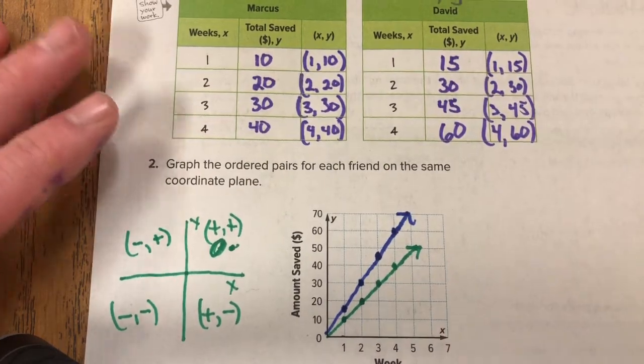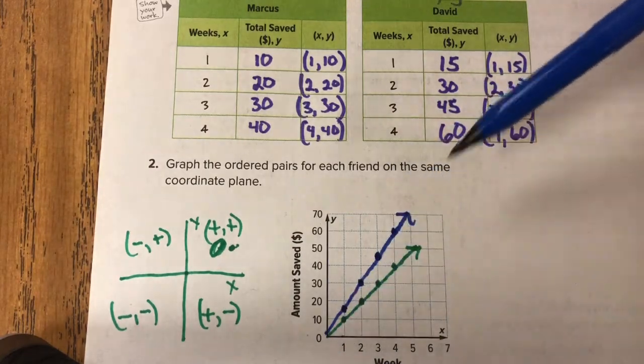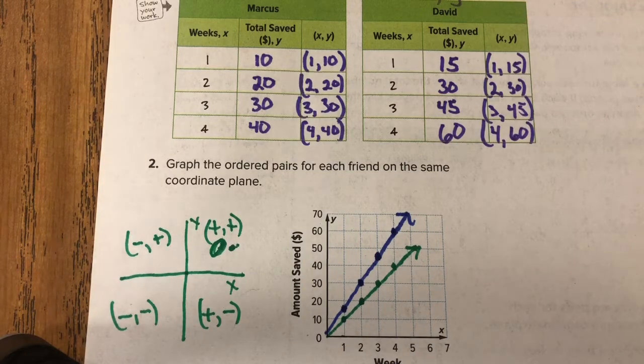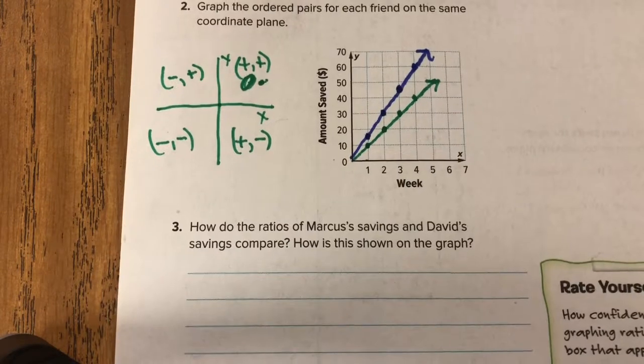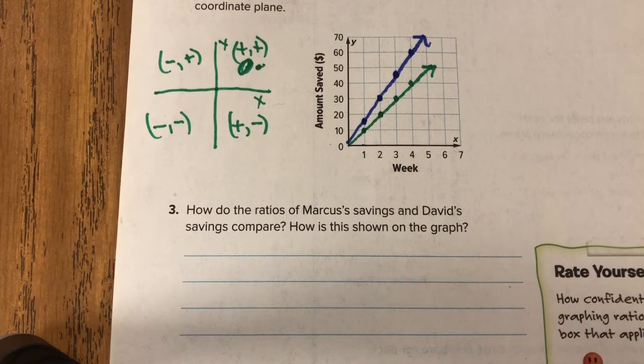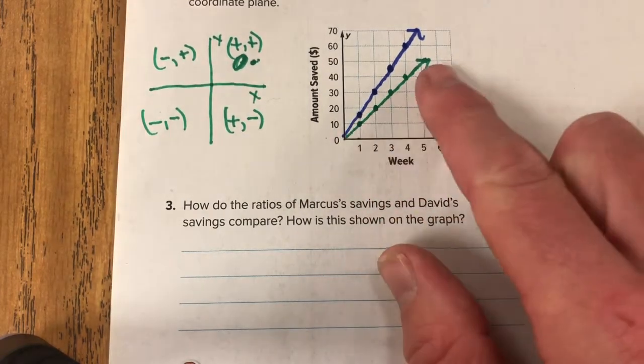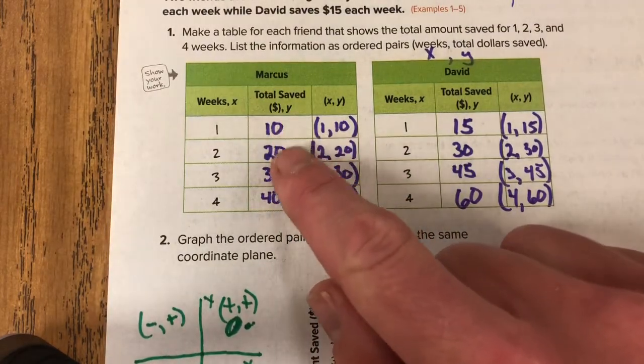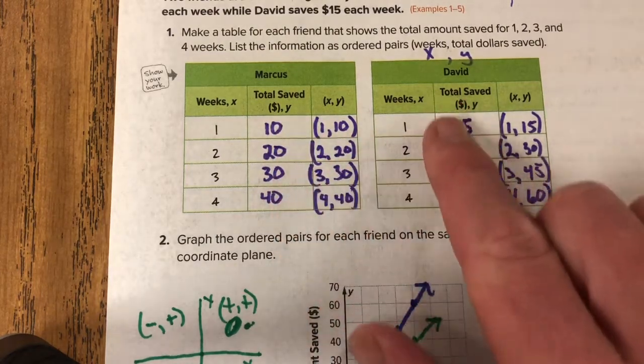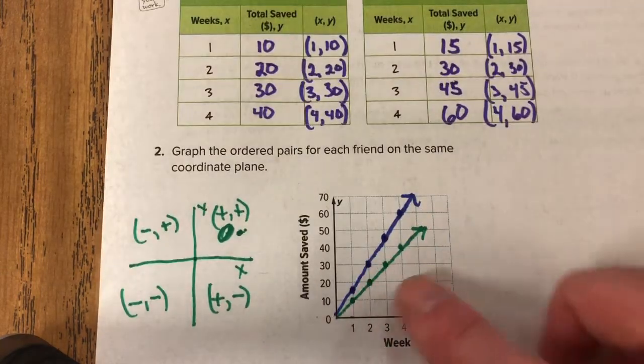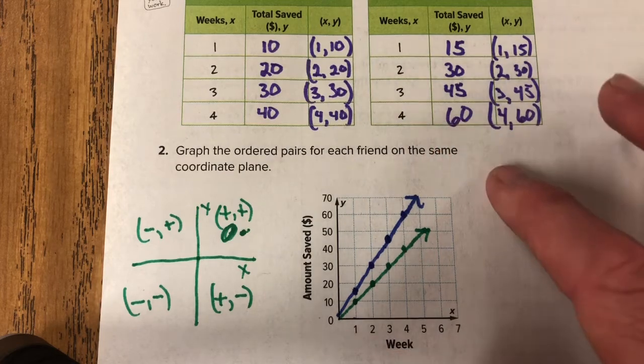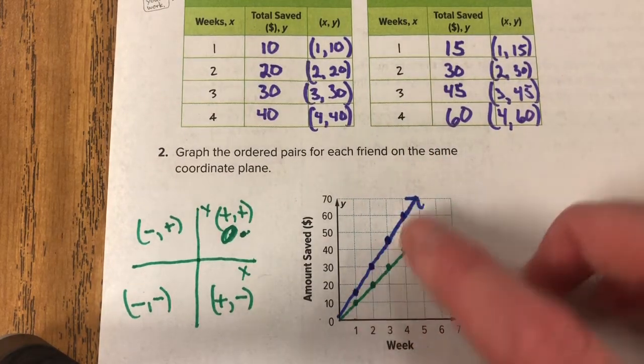And as we had earlier discussed and predicted, you can see that David's line is climbing at a steeper rate. And that's because he's saving $5 more per week compared with Marcus. So when you move down to this last step, it says, how did the ratios of Marcus's savings and David's savings compare? It's going to get a little repetitive. But one thing you can say is, well, both of their lines are straight. And the reason they're both straight is because, remember, it always increased by the same amount each time. Marcus's always goes up by 10 and David's always goes up by 15. That's why they have a straight line. And since it's a straight line, that means we could predict things way out here into the future of where they would be and how much money they would have.